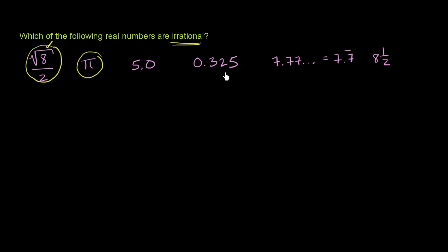0.325. Well, this is the same thing as 325 over 1,000. So I can clearly represent it as a ratio of integers. So this is rational. Just as I could represent 5.0 as 5 over 1. Both of these are rational. They are not irrational.